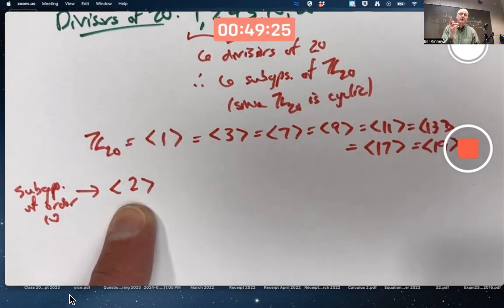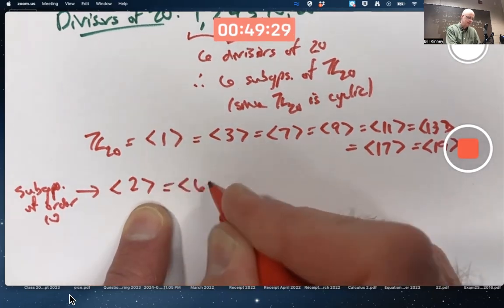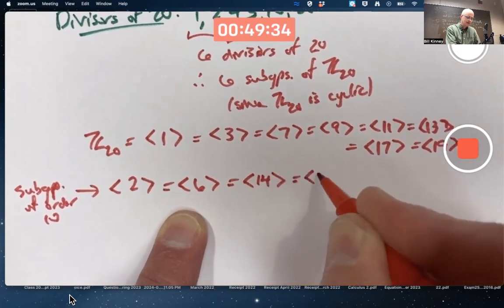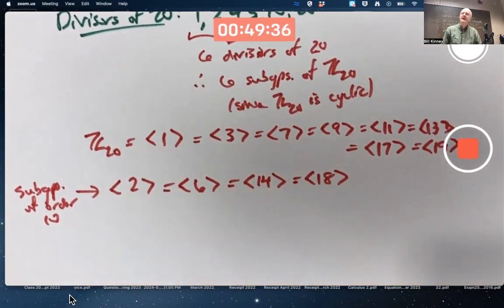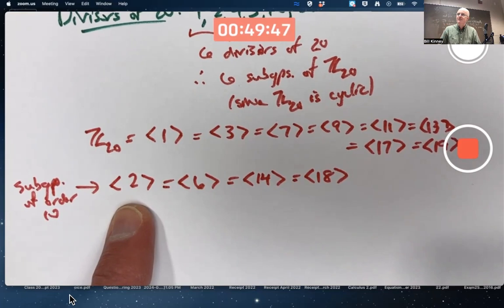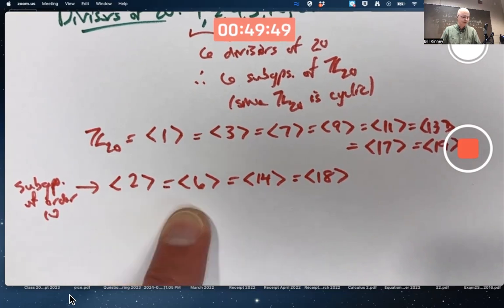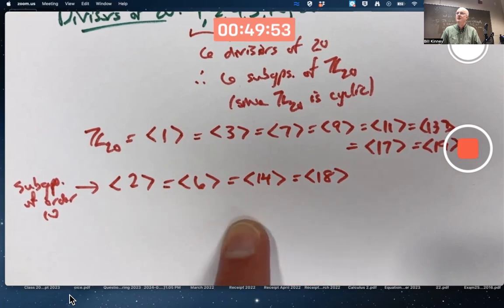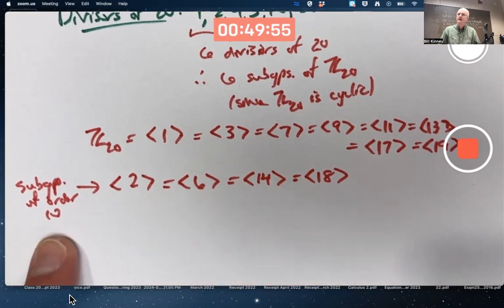Those multiples of 2 will be generators. 1 times 2, 3 times 2, 7 times 2, and 9 times 2. Those will be the generators of the cyclic group of order 10. 1, 3, 7, and 9 are relatively prime to 10. Take those as multiples of the generator, 1 times 2, 3 times 2, 7 times 2, and 9 times 2. They will be the generators of the subgroup of order 10.